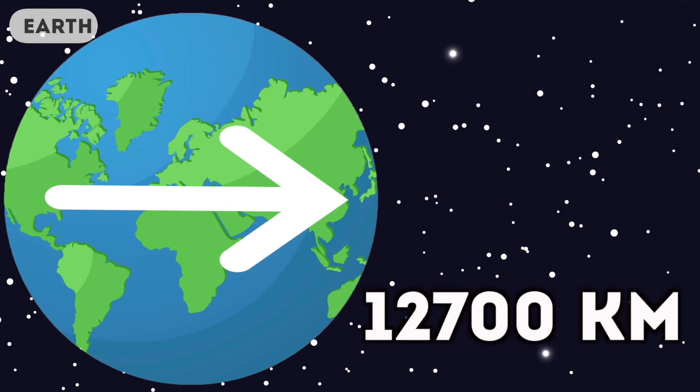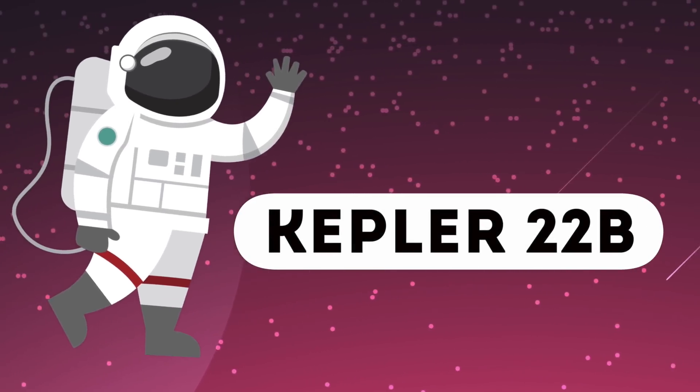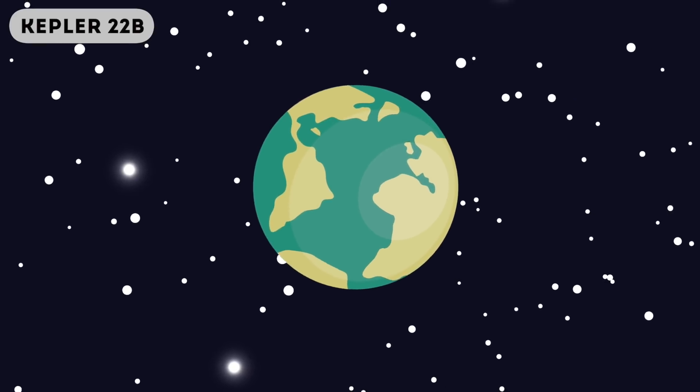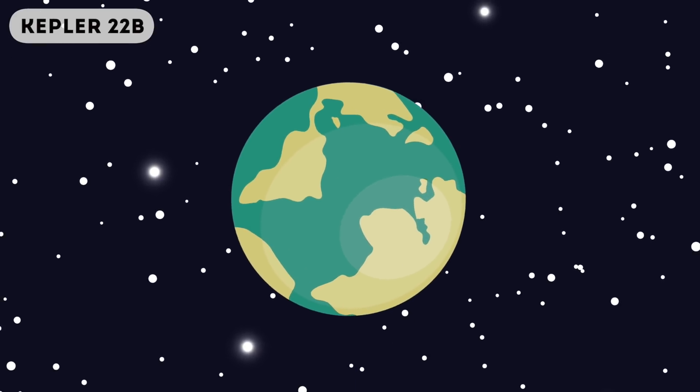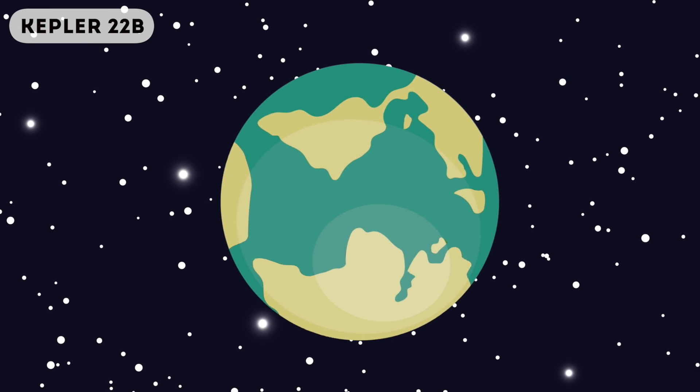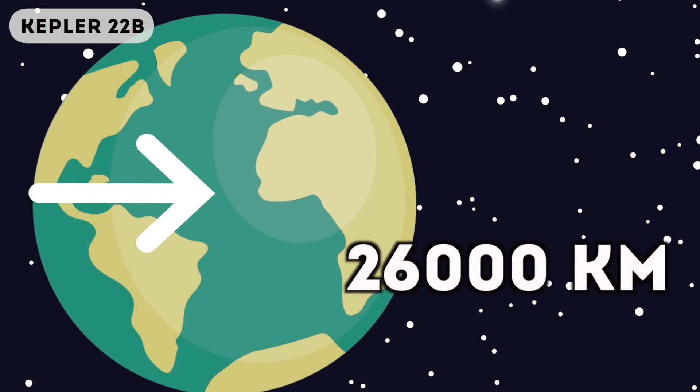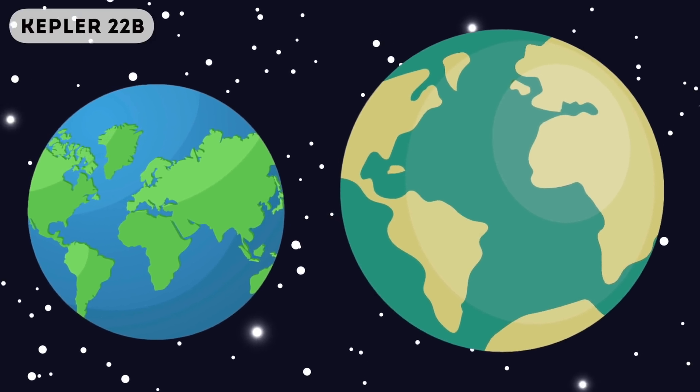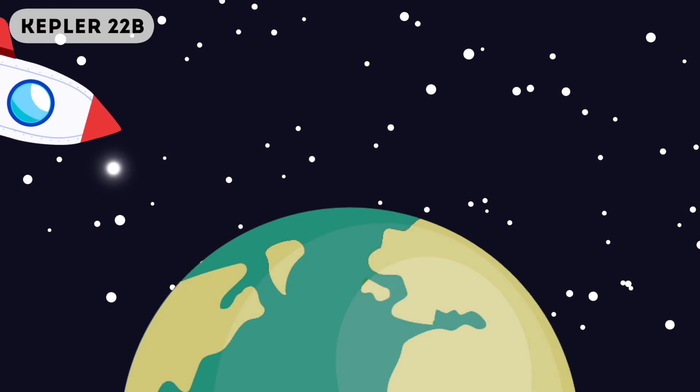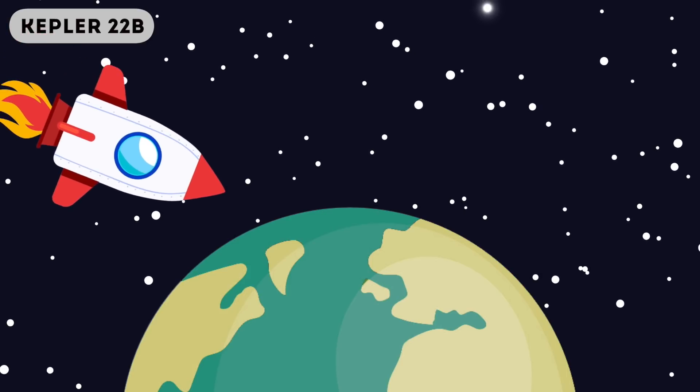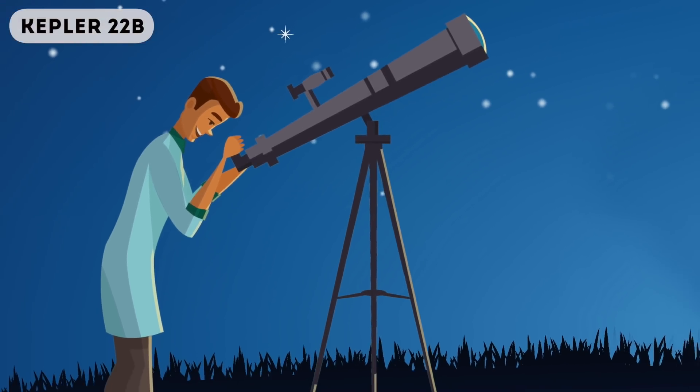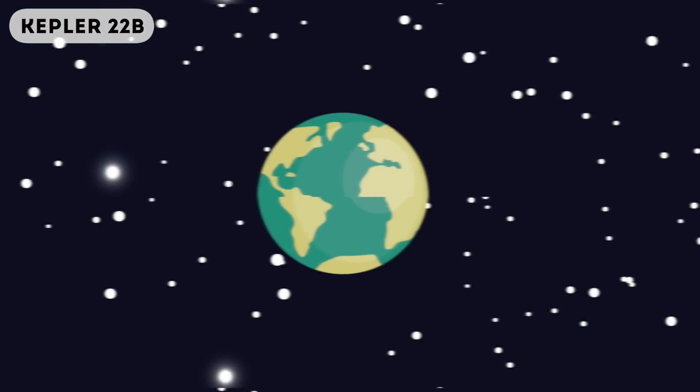Now let's check out Kepler 22B. This planet is not actually the largest in our solar system, we're about to get to those, but this planet is amazing as it's incredibly Earth-like. It's 26,000 kilometers in diameter and as you can see, this is how big it is compared to planet Earth. Amazingly, this planet is actually habitable, meaning we could live on it. This is because it's an exoplanet, which is a planet outside of our solar system. Not much is known about exoplanets as the first one was discovered in 2012, but they could definitely be a viable area to live on if the world becomes uninhabitable.